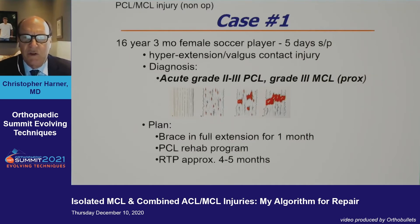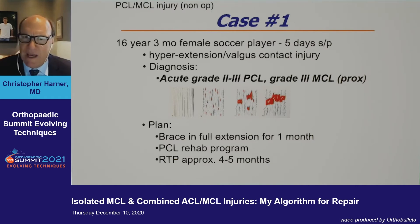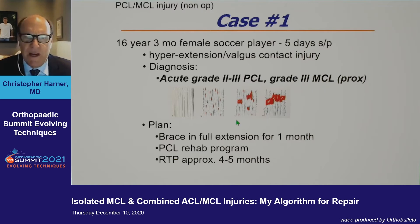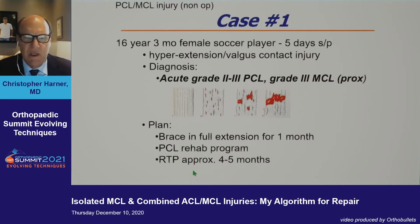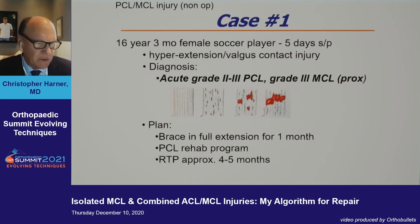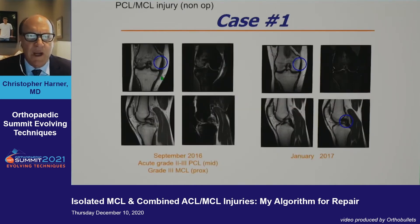Case one: a 16-year-old female soccer player who hyperextended her knee. She has an acute high-grade partial PCL (grade two to three) and a complete proximal MCL injury. My plan is to brace her in full extension for a month, put her through PCL rehab, and predict she'll take about six months to return to play if she heals.